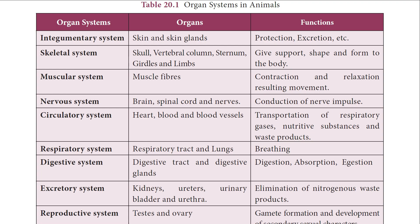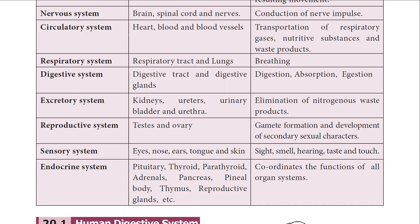The respiratory system consists of the respiratory tract and the lungs, helpful for breathing. The digestive system consists of the digestive tract and the digestive glands; their functions are digestion, absorption, and ejection of waste material. The excretory system consists of kidneys, ureters, urinary bladder, and urethra; they help in the elimination of nitrogenous waste products from our body. The reproductive system consists of testes in the male and ovaries in the female, and they are helpful for gamete formation and development of secondary sexual characters.